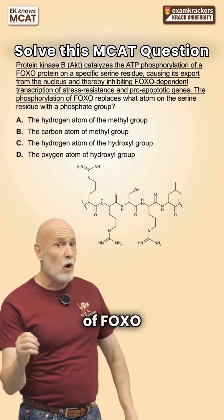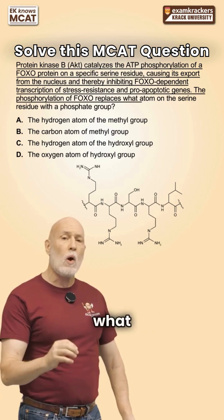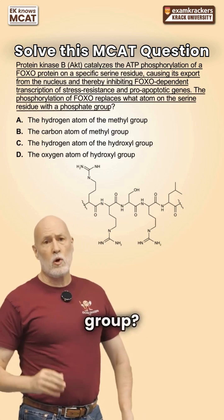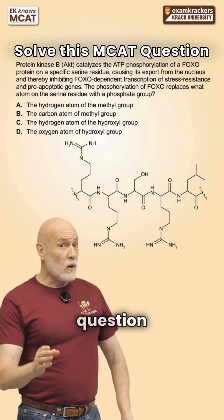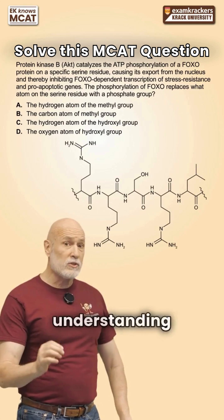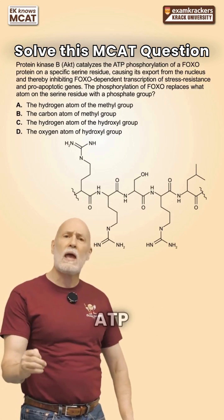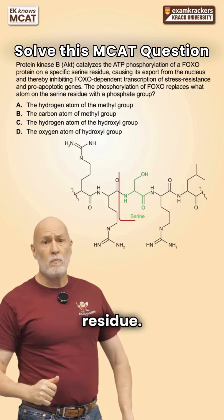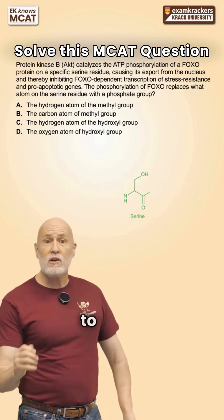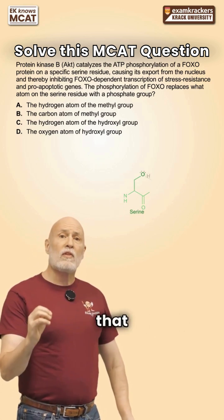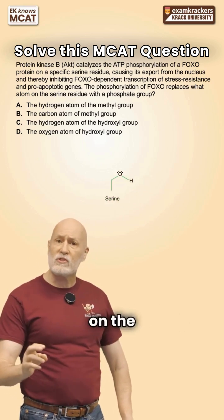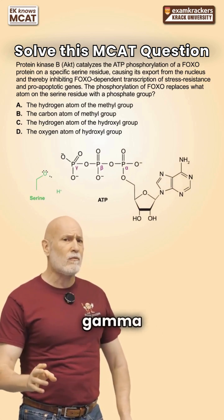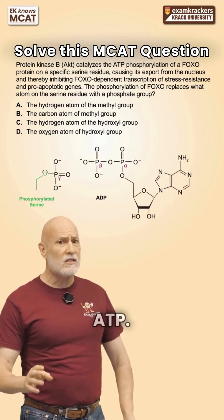The phosphorylation of FOXO replaces what atom on the serine residue with the phosphate group? This question is testing your understanding of the mechanism of a typical ATP phosphorylation of an amino acid residue. You need to know that the oxygen of the hydroxy group on the serine acts as a nucleophile attacking the gamma-phosphorus of the ATP.